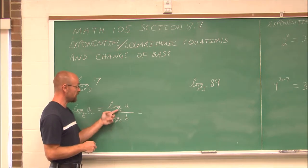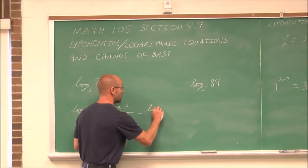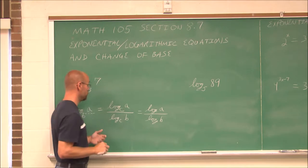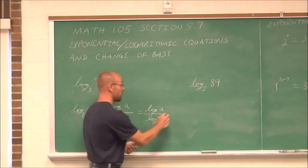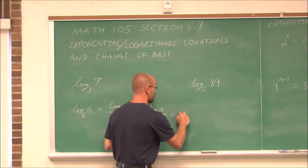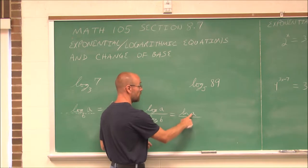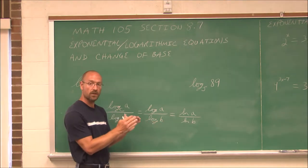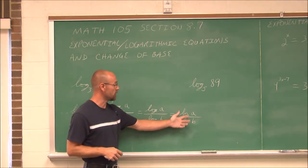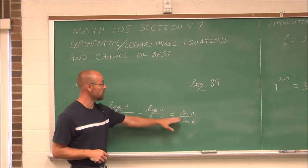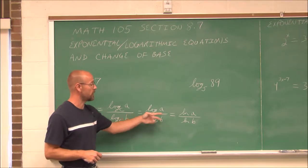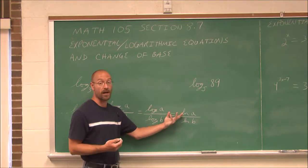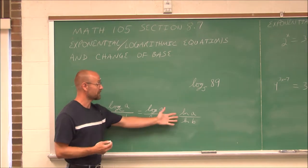Since our calculators do log base 10, I can write any logarithm in that form. Or because my calculator has a natural log key, I could take the natural log of the argument divided by the natural log of the base. Be careful — use parentheses when you put something like this into your calculator, so you don't make an error about what you're dividing by. I prefer the natural log form solely because it's one less letter to write.